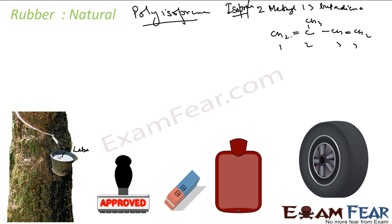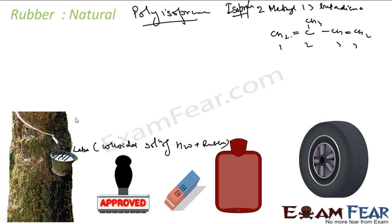This rubber is manufactured from latex. Latex is something you get from the plant — it is the colloidal dispersion of rubber in water, because the plant has water also. This latex is obtained from the bark of the rubber tree. Not from all trees will you get rubber — only from the rubber tree. Typically in Sri Lanka, a lot of rubber cultivation happens.